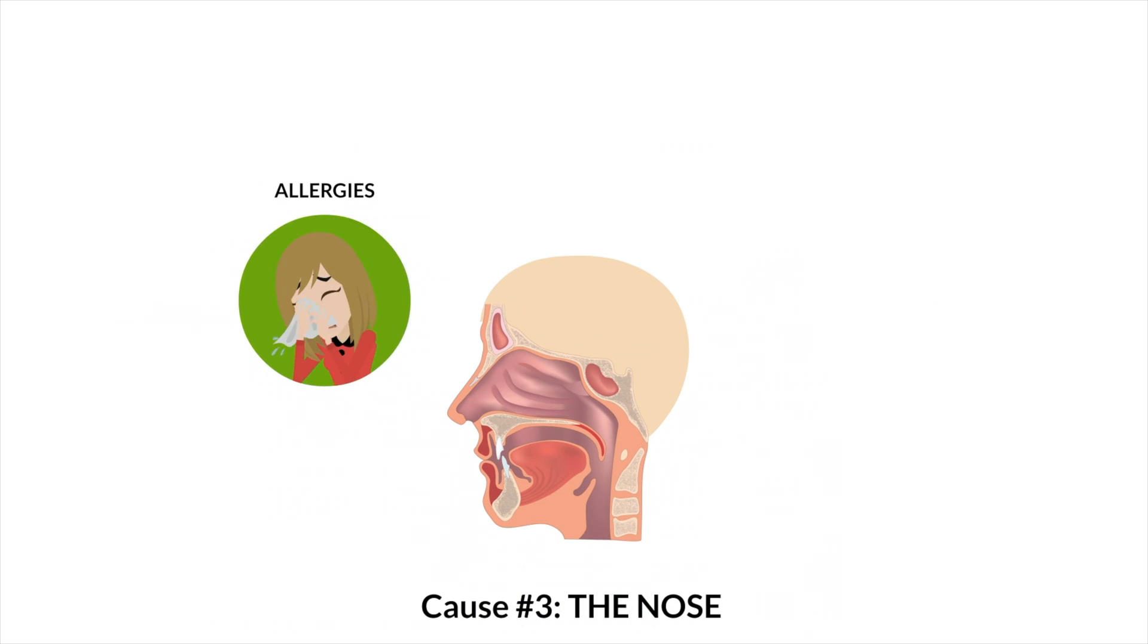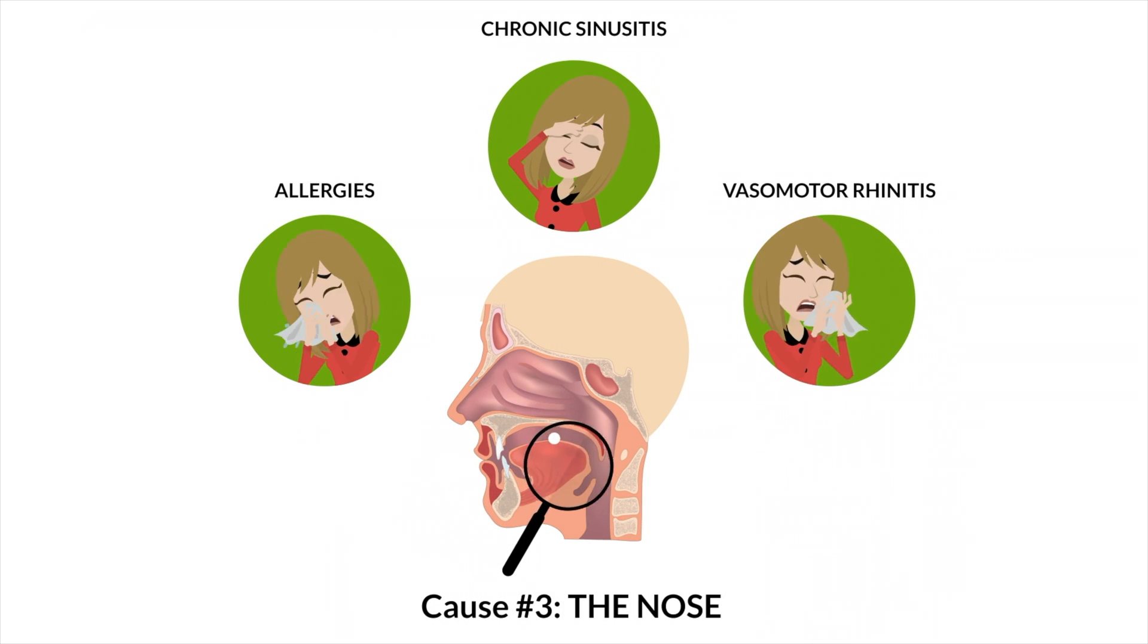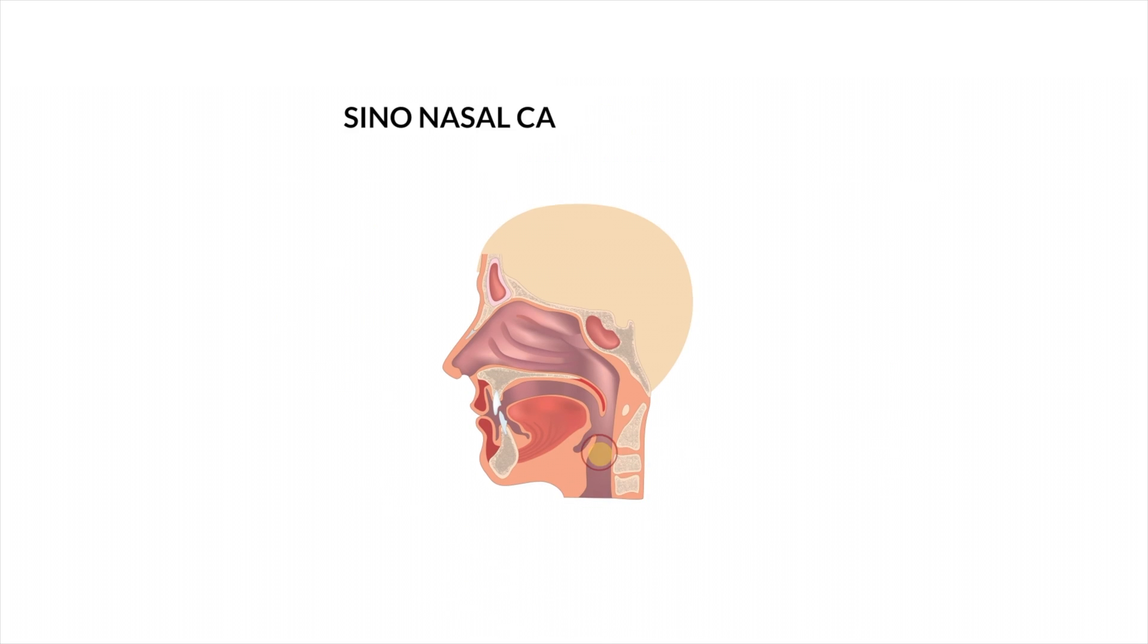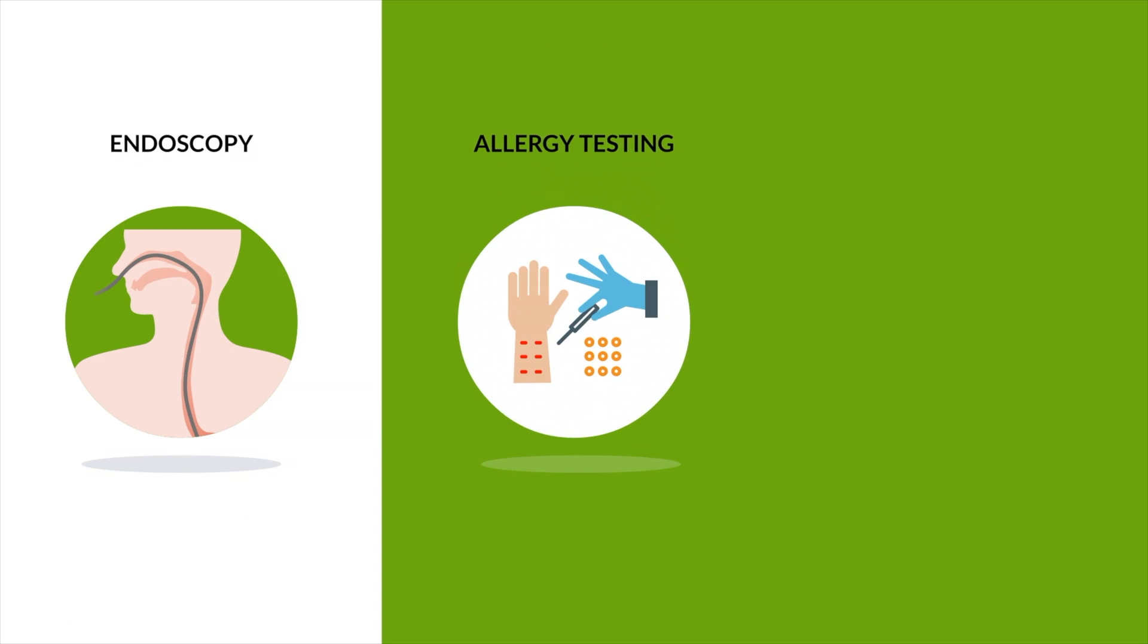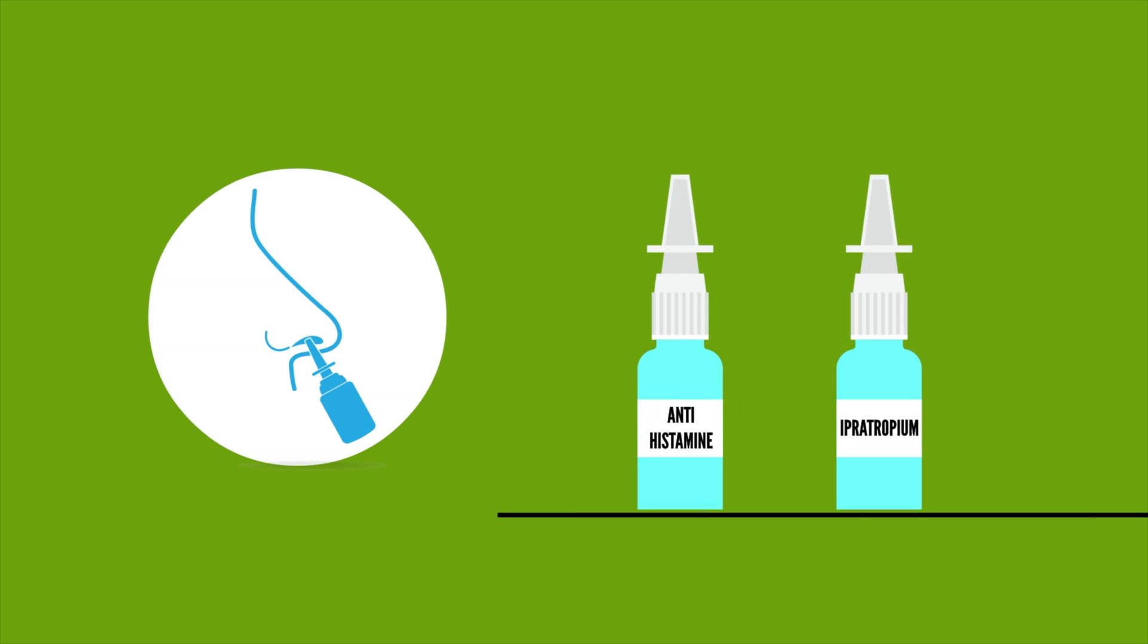Sinonasal conditions such as allergies, chronic sinusitis, and vasomotor rhinitis can trigger Globus due to post-nasal drainage irritation. Workup for sinonasal causes for Globus include transnasal endoscopy, allergy testing, and CT sinus scan. Workup also includes a trial of two different nasal sprays, an antihistamine nasal spray as well as ipratropium nasal spray in order to address vasomotor rhinitis for which no good test exists.